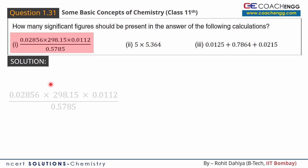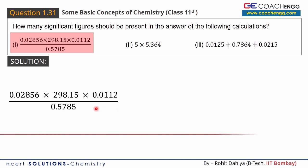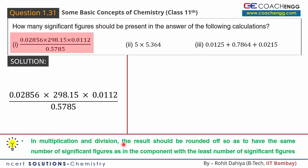First, I will solve the first part, which I have noted here. You can observe that three quantities are multiplied and then divided by a quantity. In multiplication and division, the result should be rounded off to have the same number of significant figures as the component with the least number of significant figures. So we now look at the number of significant figures in each term.